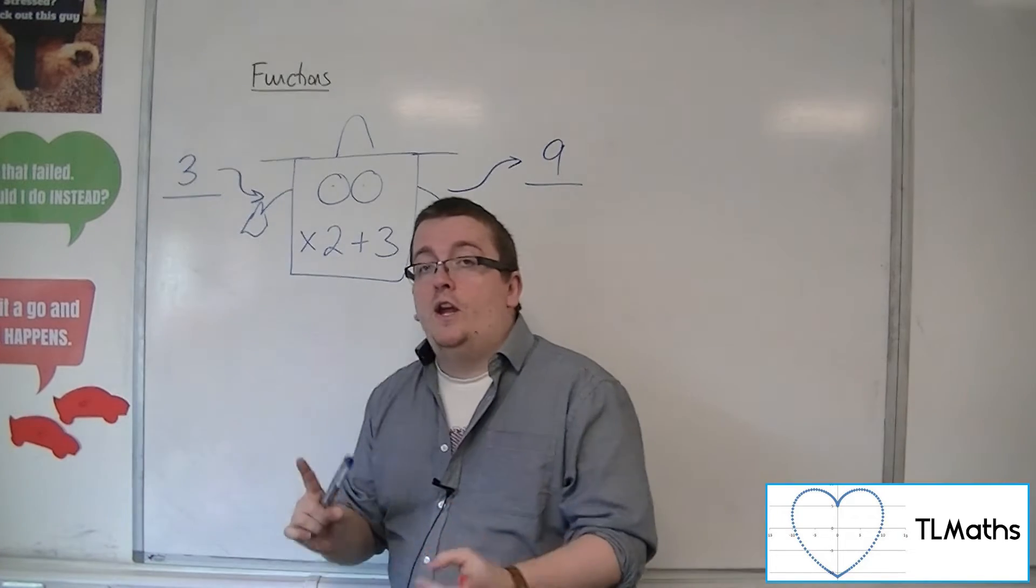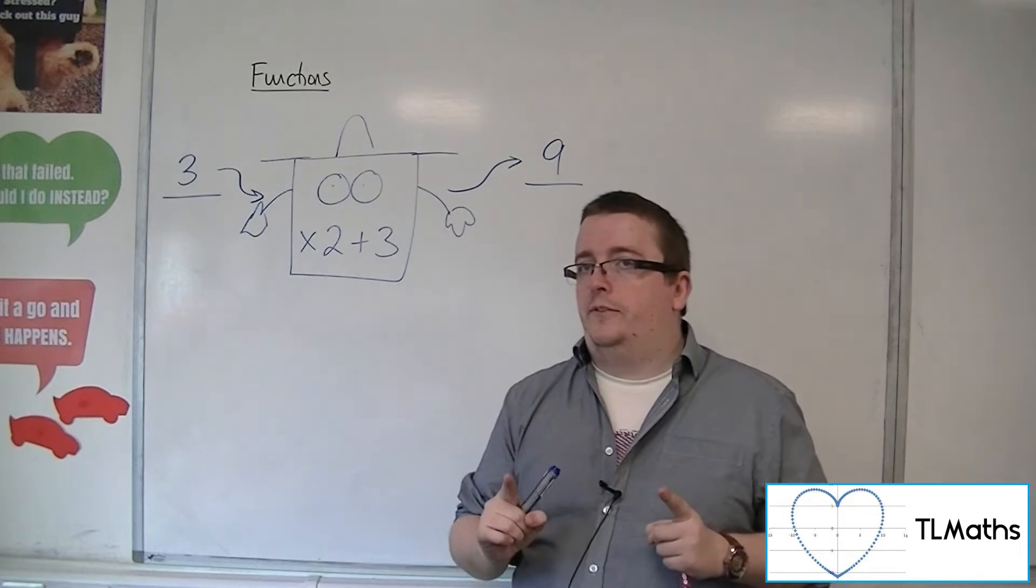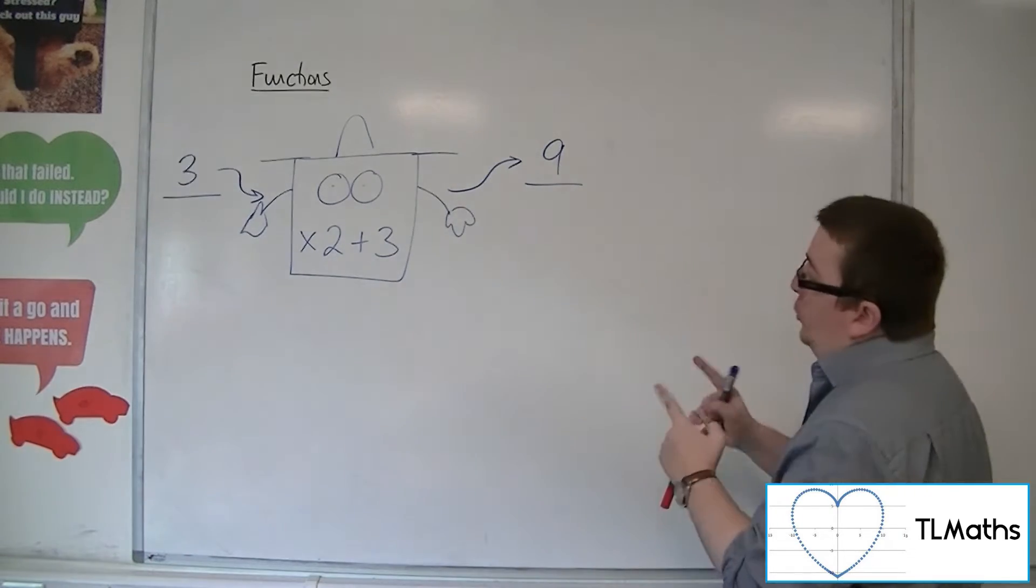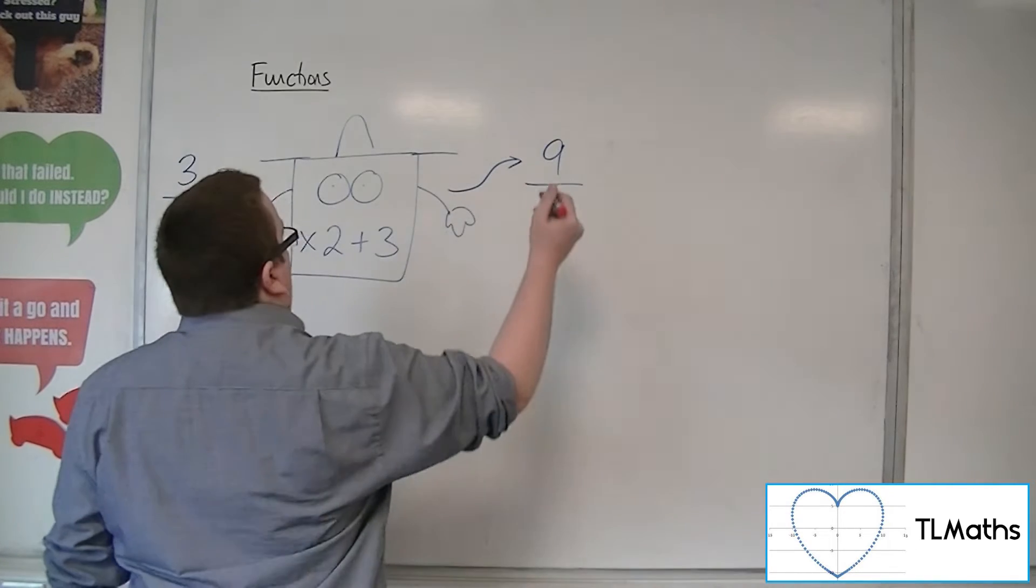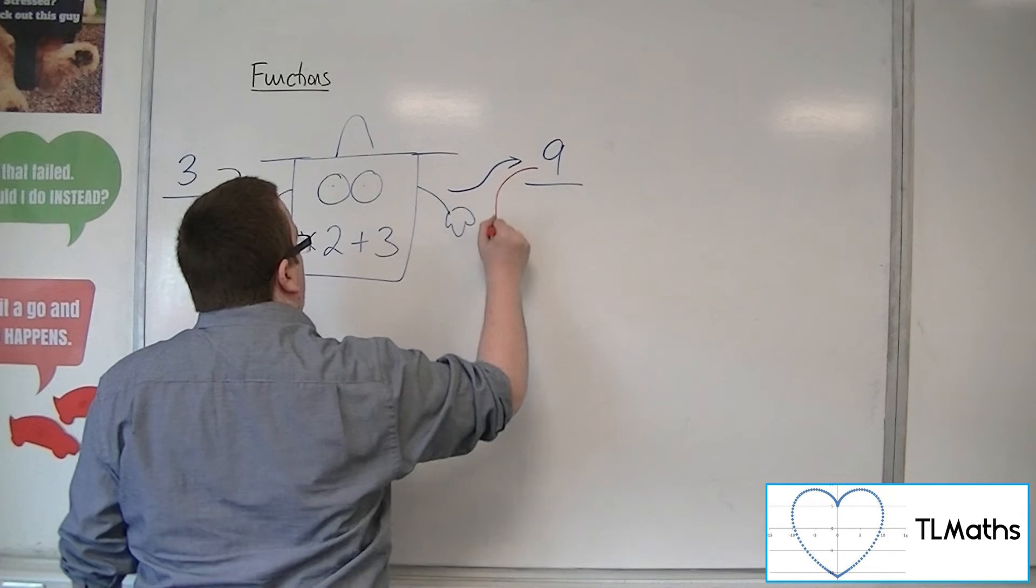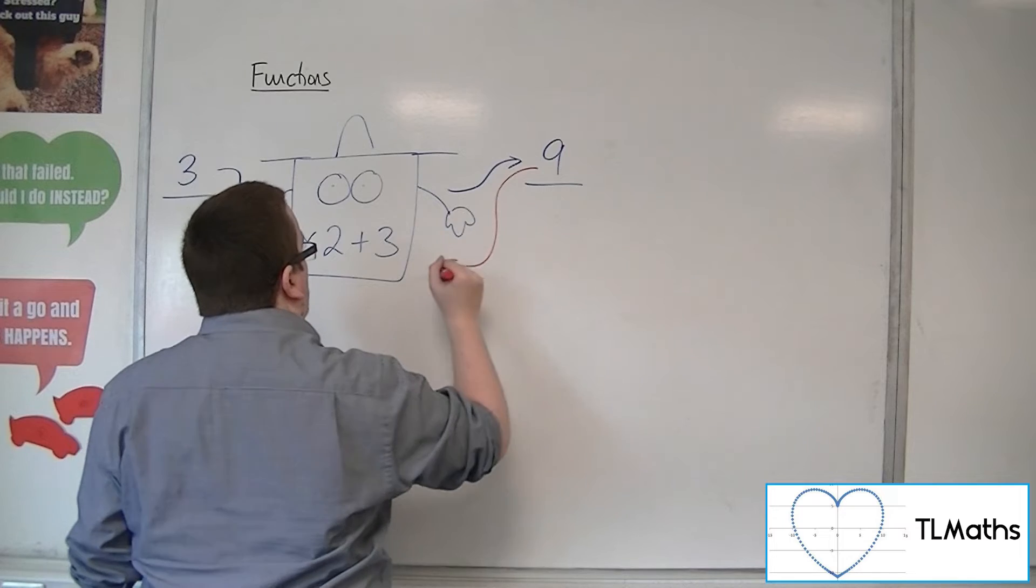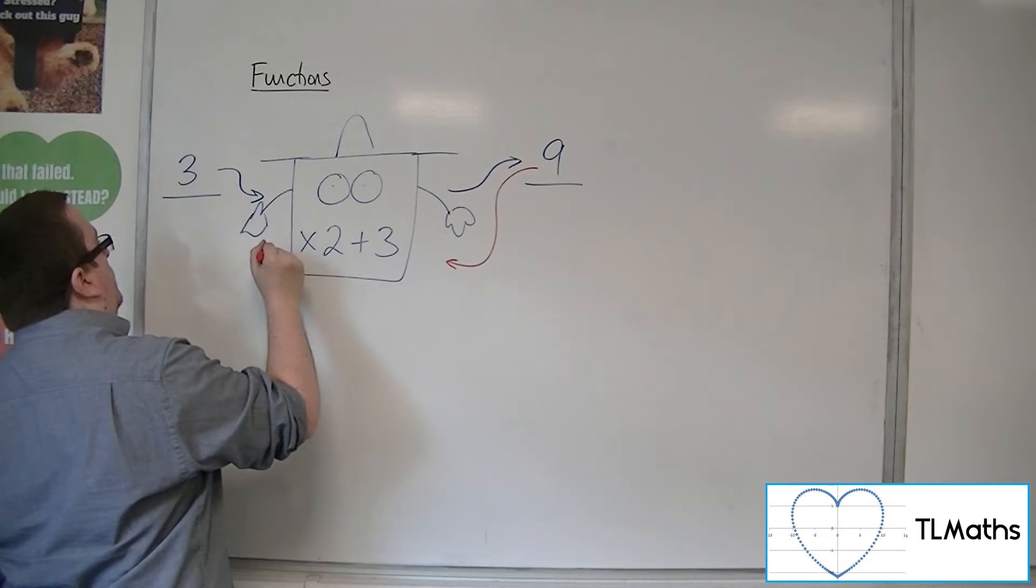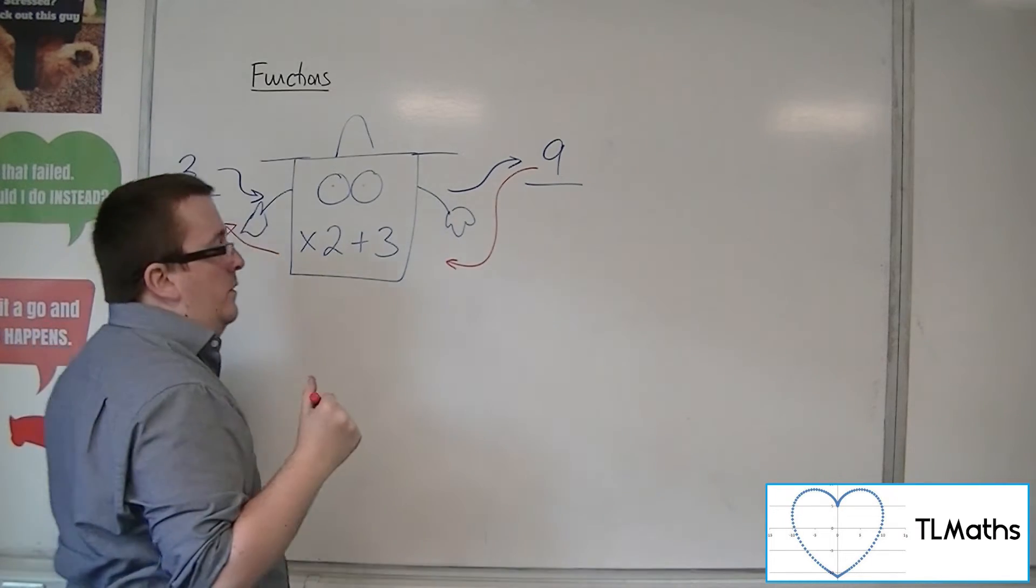Now, let's say I want to reverse this process. In order to reverse this process, I'm going to have to put this 9 back in to my function machine in order to get out a value.